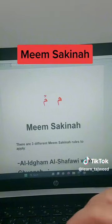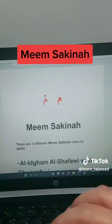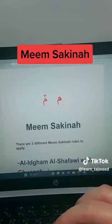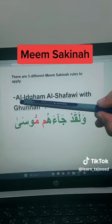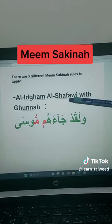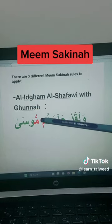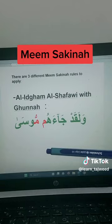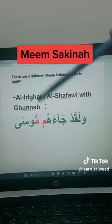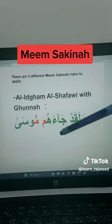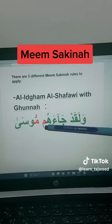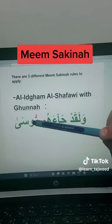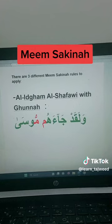One of the rules is Idgham — specifically Idgham Shafawi. You will see the Meem without any sign, followed by a Meem with Shadda. This is the Shadda. You have to do Ghunna in this case. For example: 'Wa la qad jaa'ahum Musa' — Meem and Meem. You have to do Ghunna.